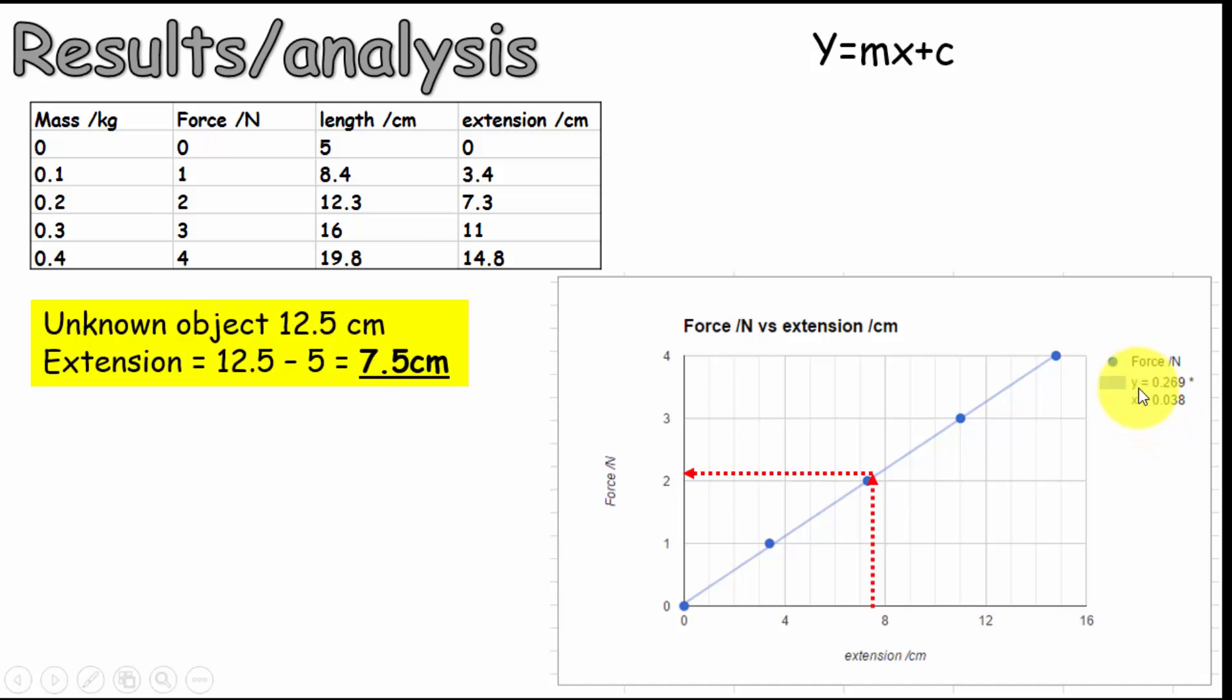It's telling me basically y equals mx plus c in the same form. And if I substitute the numbers in, the gradient of this graph is 0.269, which literally means that the spring constant was 0.269 newtons for every centimeter. Substituting the numbers into the y equals mx plus c formula and putting in the 7.5 for the extension gives me also 2.1 newtons. So you can see both methods produce concordant results.